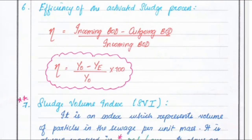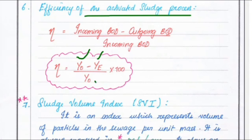Next is the efficiency of the activated sludge process. Efficiency, eta, equals incoming BOD minus outgoing BOD divided by incoming BOD. That is: eta equals Y-naught minus Y-E divided by Y-naught, multiplied by 100, where Y-naught is the incoming BOD and Y-E is the outgoing BOD.